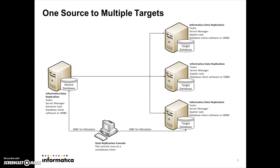To replicate data to multiple targets, you typically install IDR on the source system and on each target system. On the source system, run an extractor task and a server manager instance, and on each target system, run an applier task and a server manager instance. The server manager transmits intermediate files from one source to each target. This image shows a typical topology that includes three targets with IDR console on a standalone machine.